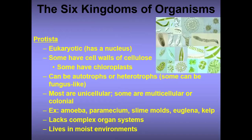Protista are eukaryotic, meaning they have a nucleus. Some have cell walls of cellulose and some have chloroplasts. They can be autotrophs or heterotrophs, and some can be fungus-like. Most are unicellular, though some are multicellular or colonial. Examples include amoeba, paramecium, slime molds, euglena, and kelp. They lack complex organ systems and live in moist environments.